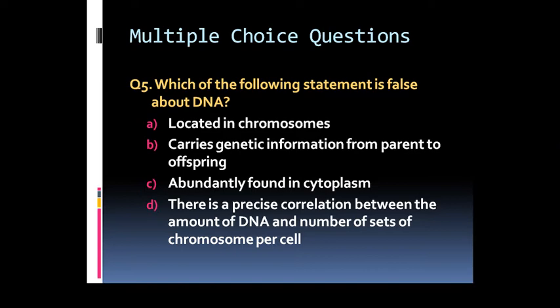Option C: Abundantly found in cytoplasm. Or Option D: There is a precise correlation between amount of DNA and number of sets of chromosome per cell.